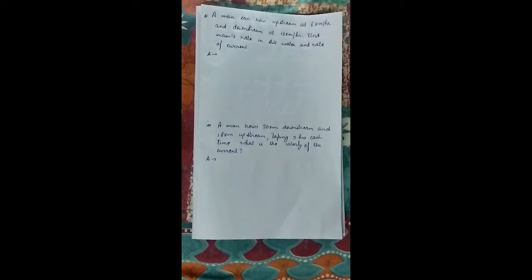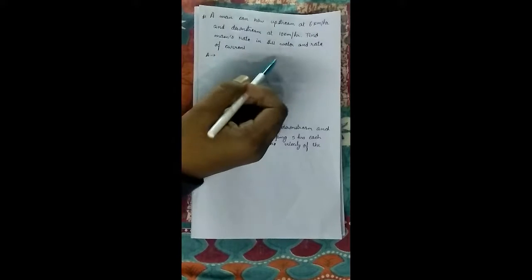The question here is a man can row upstream at 6 km per hour and downstream at 10 km per hour. Find the man's rate in still water and rate of current.